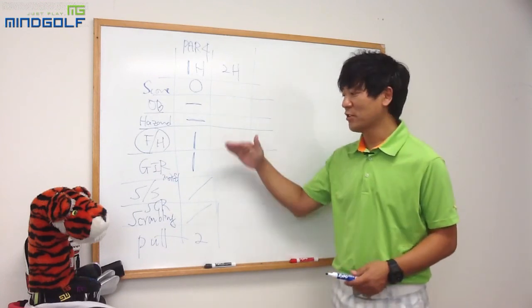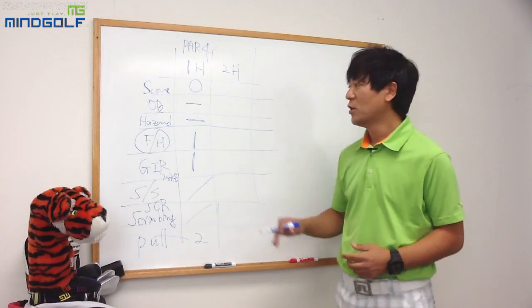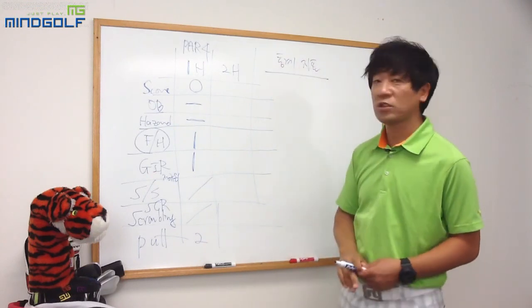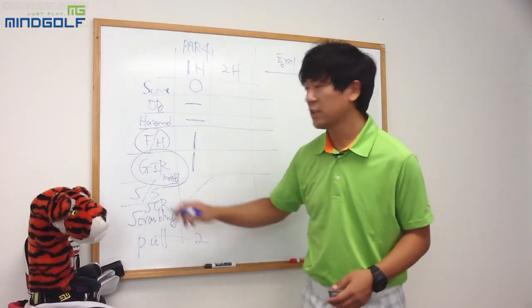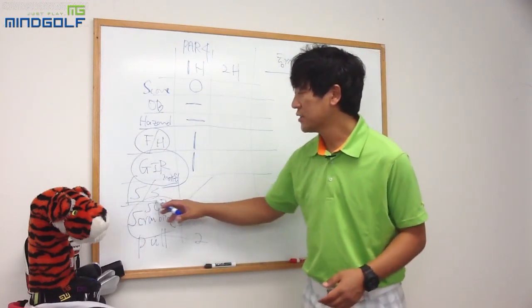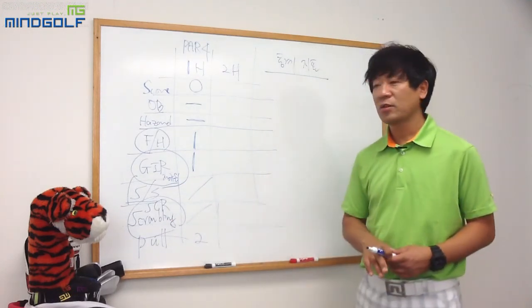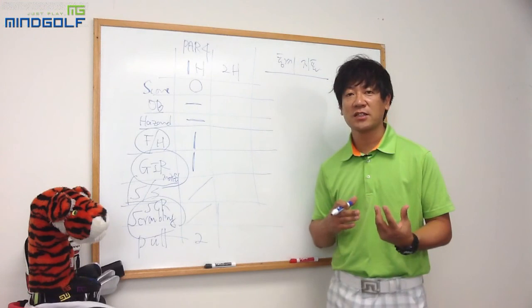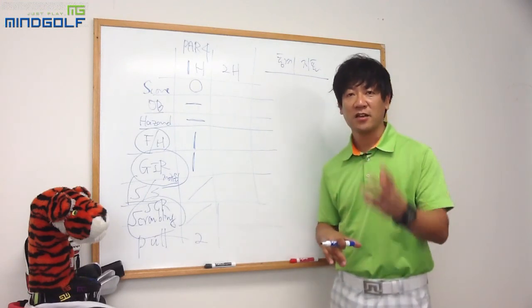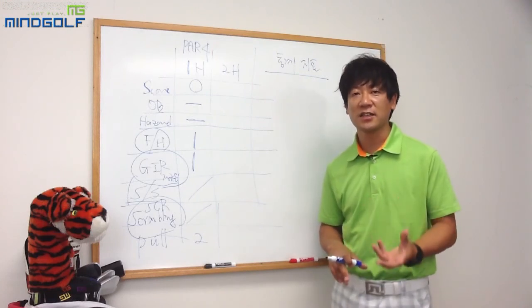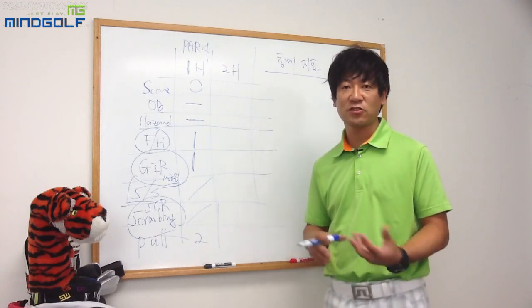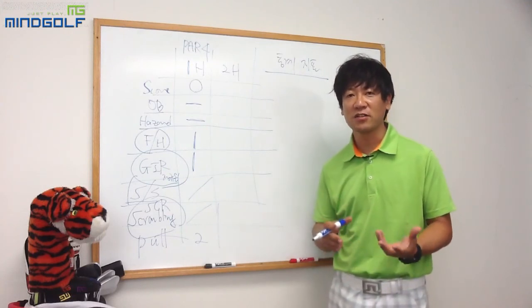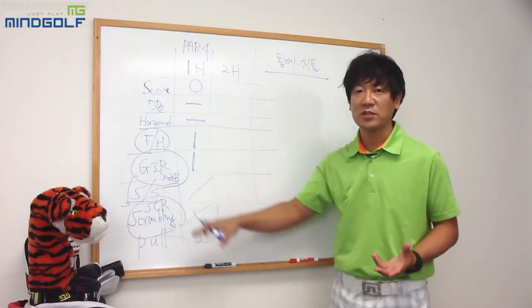마인드 골프는 이렇게 1번 홀부터 18번 홀까지 모두 이런 통계로 적는데요. 오늘 이 통계 지표 중에 주로 설명해 드리려고 하는 것은 G.I.R.과 스크램블링입니다. 거기에 샌드 세이브까지 설명해 드리겠습니다. 이 지표들은 통계에서도 굉장히 많이 이야기하고, 다른 사람들과 골프에 대한 이야기를 할 때 그 사람의 골프 실력도 이야기할 수 있는 굉장히 많이 쓰는 용어입니다.